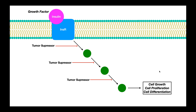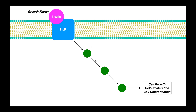But what happens if there's a mutation in the tumor suppressor gene? Very much like we saw with cell cycle regulators, if there's a mutation in the tumor suppressor gene, then the mRNA is mutant, and then these tumor suppressor proteins are mutant and dysfunctional. They're no longer able to block these steps. And if they're no longer able to block them, these things just get out of whack — and now you have uncontrolled cell growth, cell proliferation, and cell differentiation. That has to do with the uncontrollability of cancer.